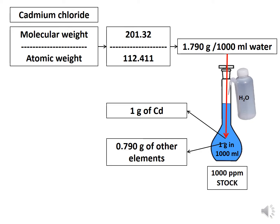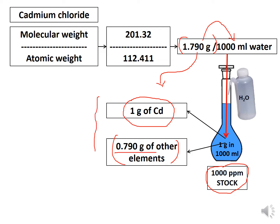Based on this formula — molecular weight of the compound divided by atomic weight of the element — we get a value of 1.790 grams, which is mixed with 1 liter of water to give 1000 ppm of stock. Taking 1.790 g of cadmium chloride means it contains 1 gram of cadmium and 0.790 grams of other elements. So 1.790 g of the compound dissolved in 1 liter of water gives 1000 ppm.